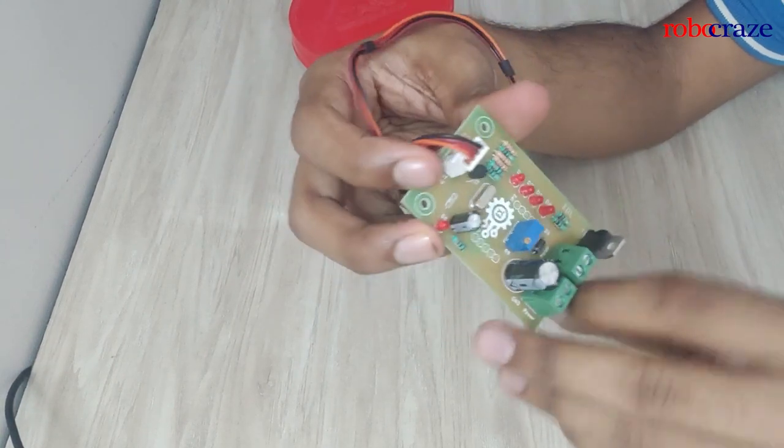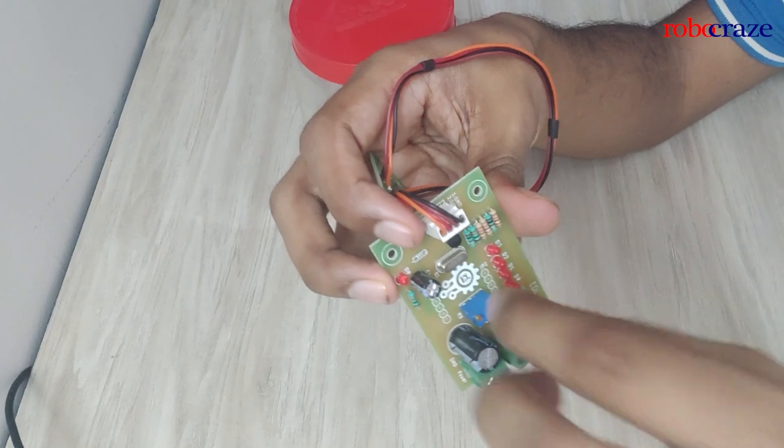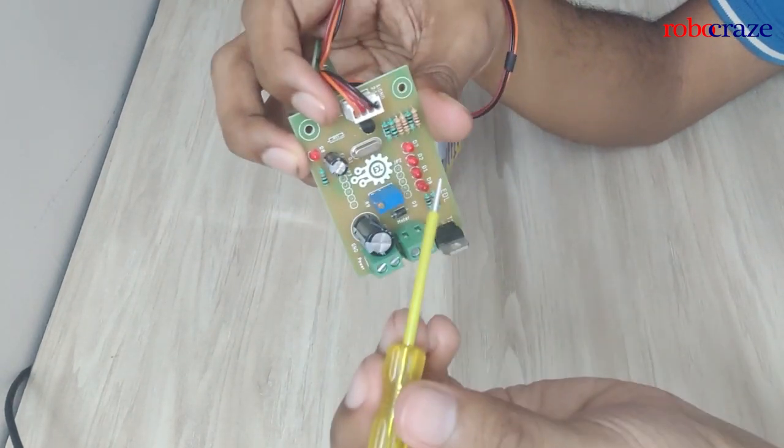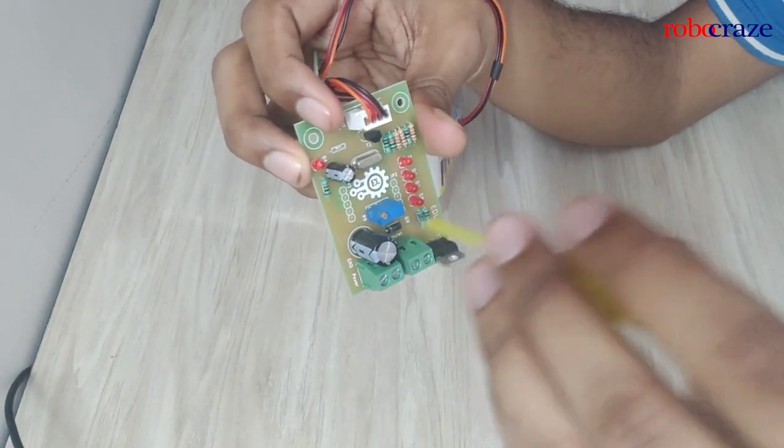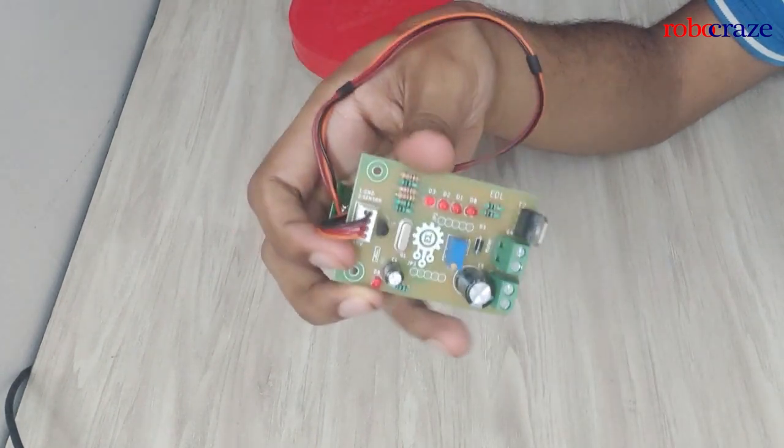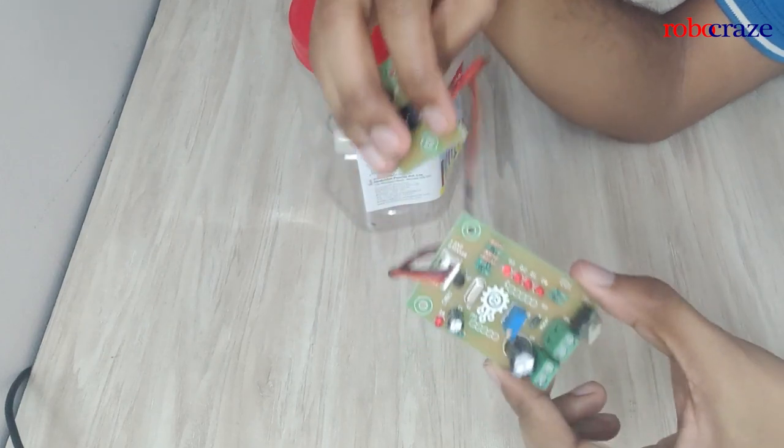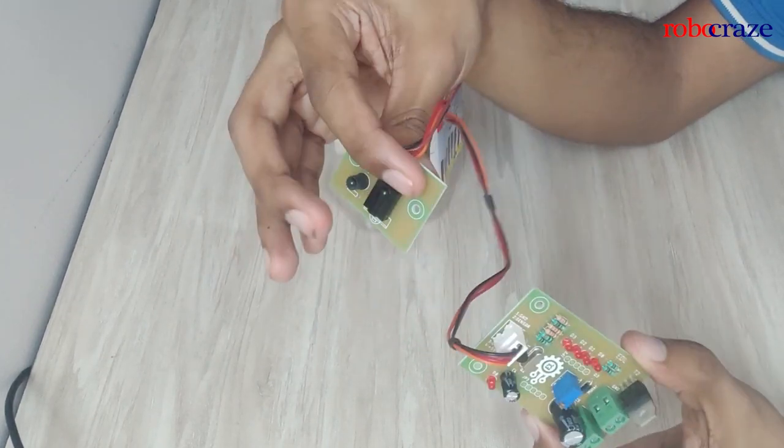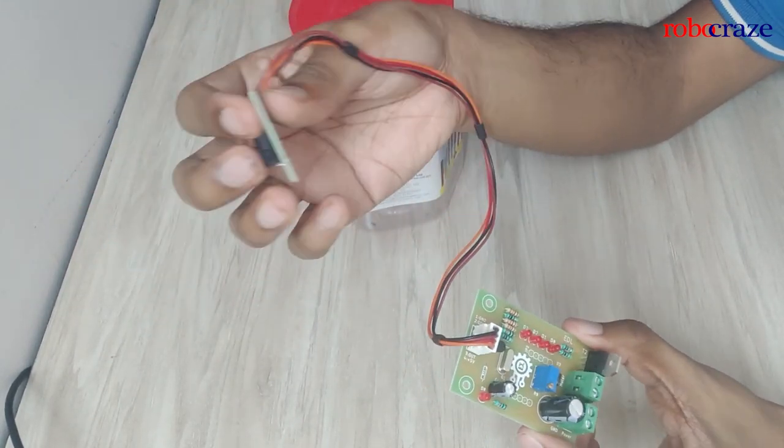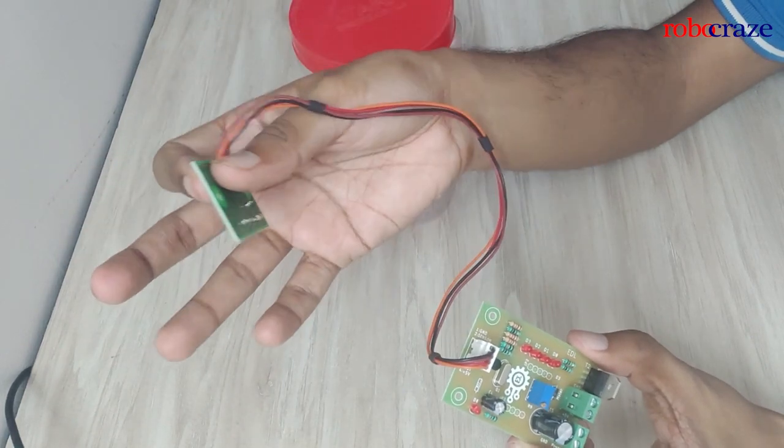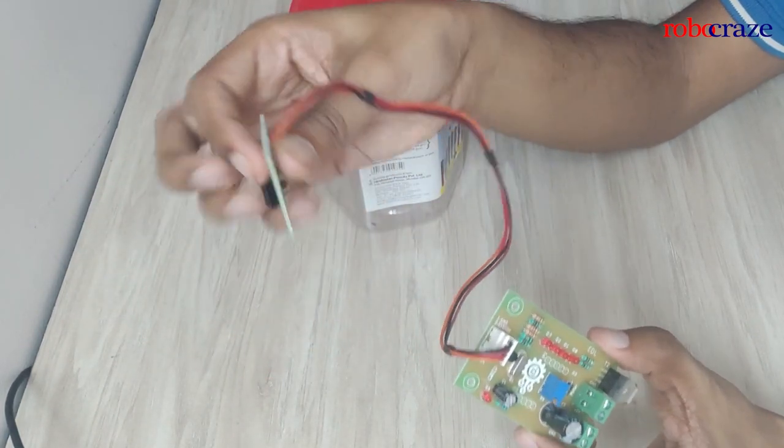The module also has a potentiometer which you can adjust using a flat head screwdriver and adjust the time on how much the sanitizer gets dispensed. For example, you can adjust it to dispense the sanitizer for just one second or you can adjust it to dispense the sanitizer for two or three seconds.